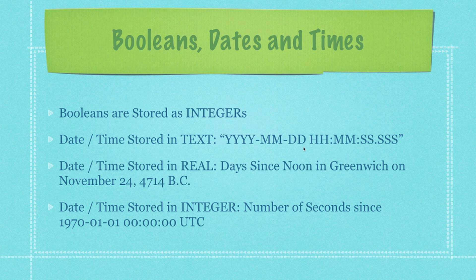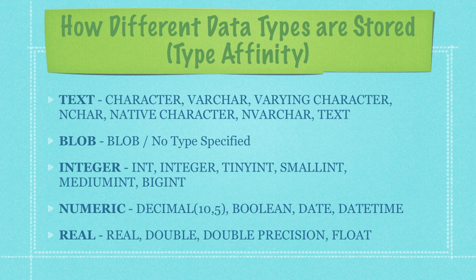The most common way to store dates and times is as text. You can also store them as a real data type, which is extremely odd-looking, or as integers, which is a little weird but not quite so weird. When you are creating your tables inside of SQLite you can actually enter the data type as any of these different types — they'll ultimately be converted into text, blob, integer, numeric, or real.